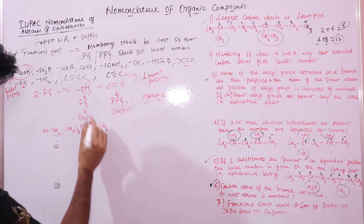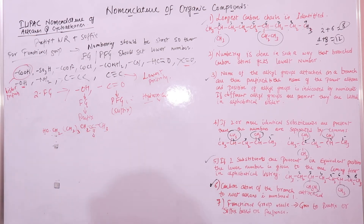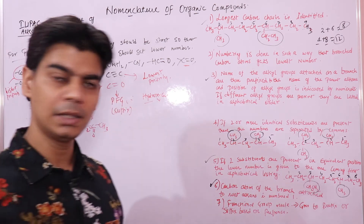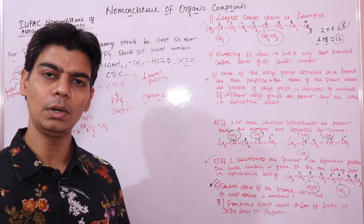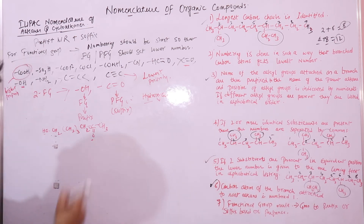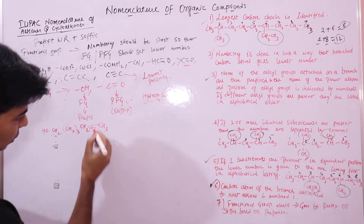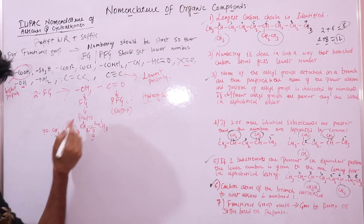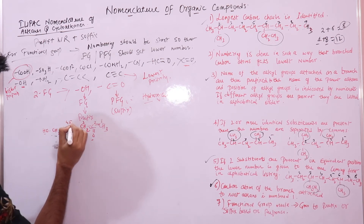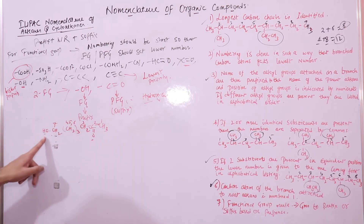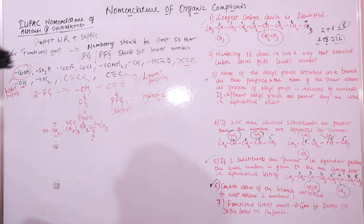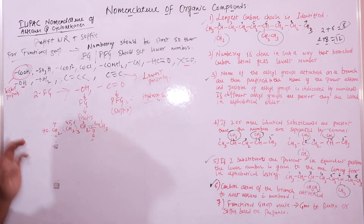This compound has a ketone group and an OH group. Ketone has higher priority, so it is the principal functional group — it goes in the suffix, and numbering starts so that ketone gets the lowest number. Numbering: 1, 2, 3 — ketone at position 2; then 4, 5, 6, 7. The OH group is at carbon 7 and will go in the prefix. The longest chain has 7 carbon atoms — hept.